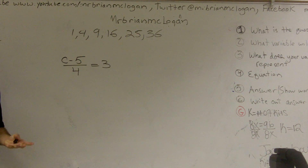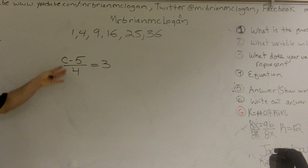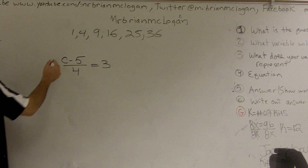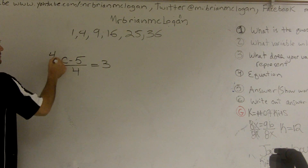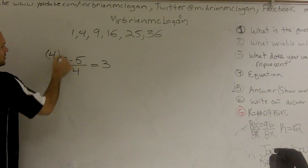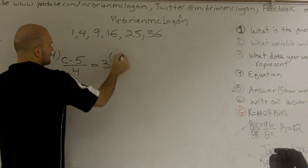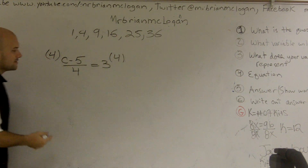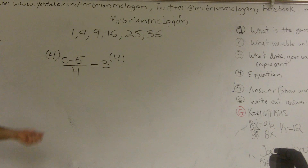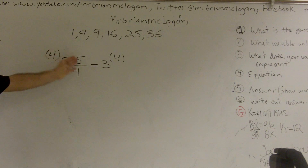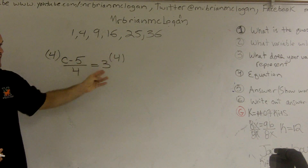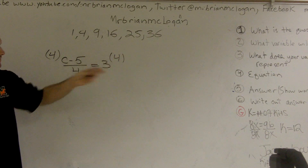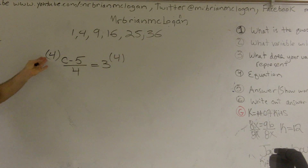So what we have to do is we have to first simplify our fraction. To simplify our fraction, we have to multiply by 4. So you multiply by 4 over here and you multiply by 4 over here. Then the next question that comes is, what does this 4 multiply by over here?